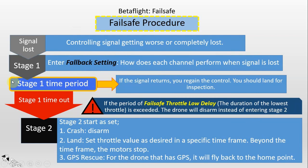Stage 1 has a time period which you can set for how long it will last. During this time period, if the controlling signal returns then you can regain control and everything resumes normally. It is recommended that you should land your aircraft to inspect what happened and what caused the signal loss. But if the signal does not return and the Stage 1 time is out, then the flight controller failsafe will enter into Stage 2.